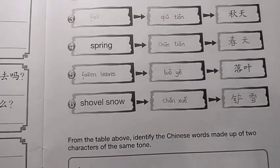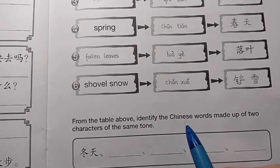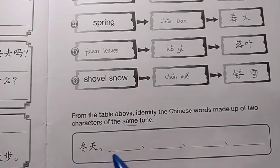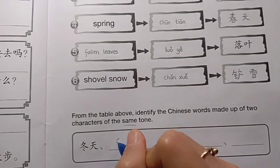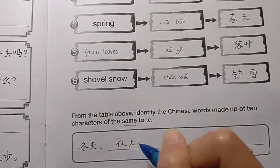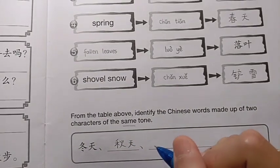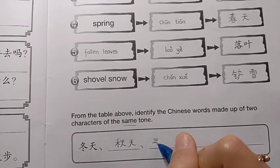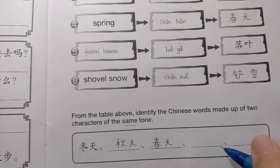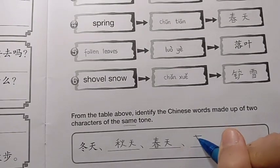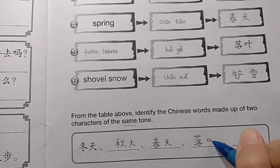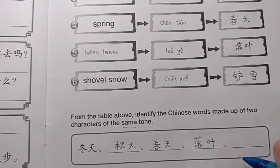From the table above, identify the Chinese words made up of two characters of the same tone. The example is Dongtian. The second one is Qiutian. The third is Chuntian. The fourth is Luoye. And the last one is Xuanxue.